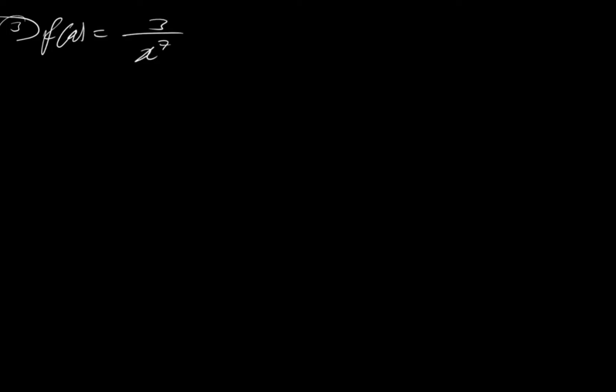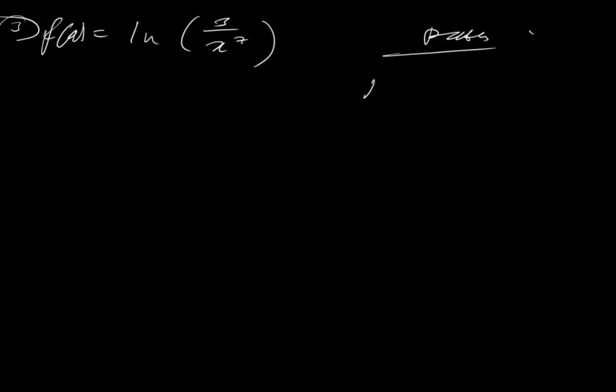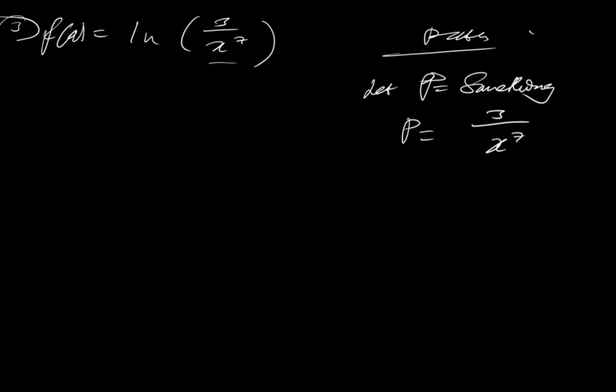Let's look at example 3. Say you have f(x) = ln(3/x⁷). You can pause this video and attempt to try it on your own. I'm trying to make these videos similar to previous examples so you can get familiar with the concept. So you have ln of 3 over x⁷. Remember in your working, all you have to find is the something. I can let p be equal to something. So p is 3 over x⁷.